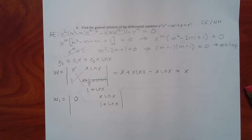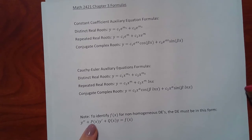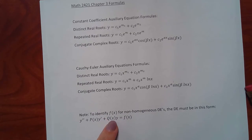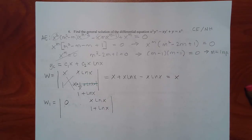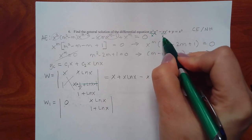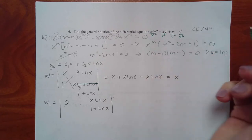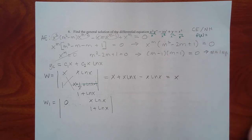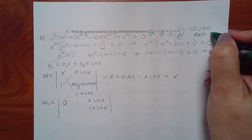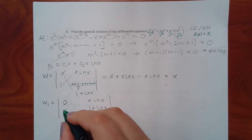The equation must be in standard form to identify f(x): divide by x squared so y double prime is by itself. The right-hand side x cubed divided by x squared gives f(x) equals x. For W1, replace the first column with zero and x; determinant gives zero minus x times x·ln(x), which is negative x squared·ln(x). For W2: keeping the first column as x and 1, determinant gives x squared.